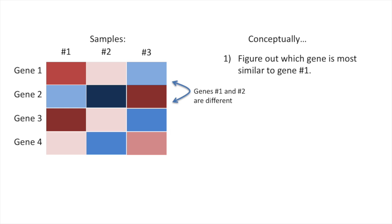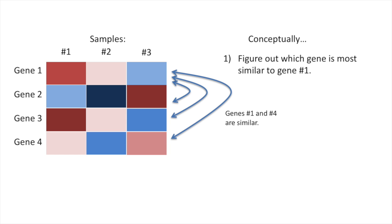Gene two, however, is not highly expressed in sample number one, so it has a blue color. In sample number three, gene one is lowly expressed so it's blue, and gene two is highly expressed so it's red. Genes one and three are similar — in sample one, both gene one and three are red, they're highly expressed, and in sample three they're both blue, meaning they're lowly expressed. Genes one and four are also similar. However, gene number one is most similar to gene number three.